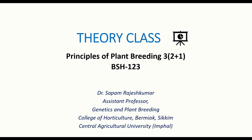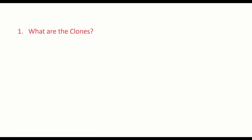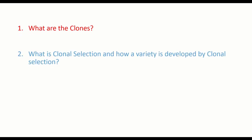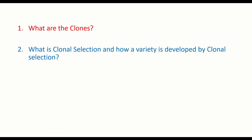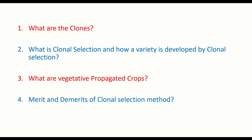Hello students, welcome to the theory class on principles of plant breeding. Today's topic is breeding methods for vegetatively propagated crops. We'll discuss the clonal selection method. By the end of this lecture, you'll be able to answer: what are clones, what is clonal selection, how a variety is developed by clonal selection, what are vegetatively propagated crops, and what are the pros and cons of clonal selection.